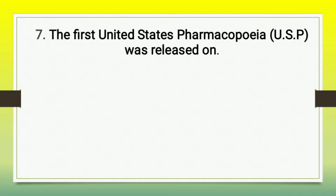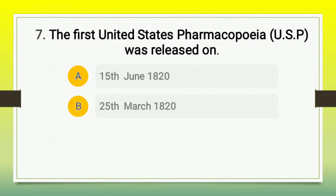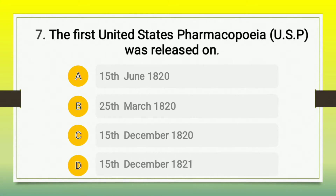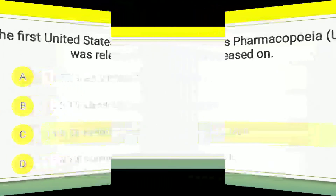Question number 7: the first United States Pharmacopoeia was released on — A) 15th of June 1820, B) 25th of March 1820, C) 15th of December 1820, D) 15th of December 1821. If you are thinking option D you are wrong — the correct answer is option C, 15th of December 1820.